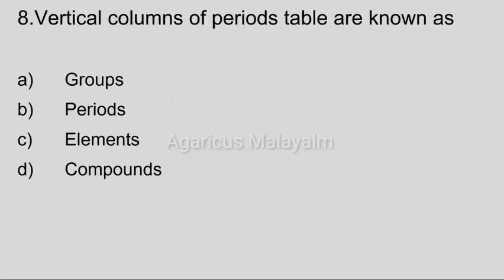Eighth question: Vertical columns of the periodic table are known as? Option A: Groups. Option B: Periods. Option C: Elements. Option D: Compounds. Correct answer: Option A, Groups.